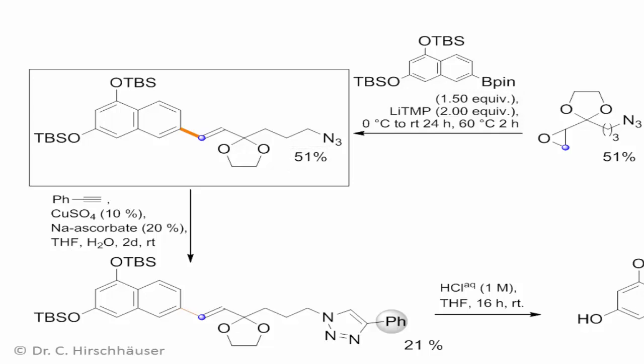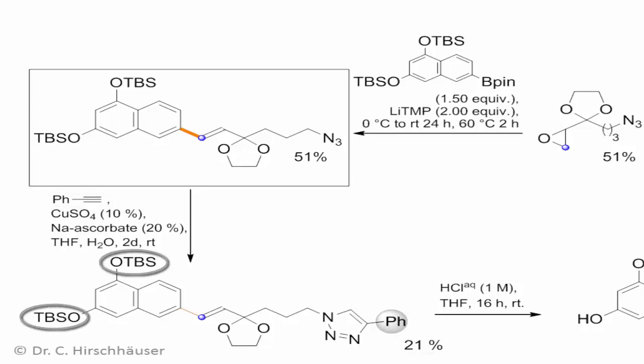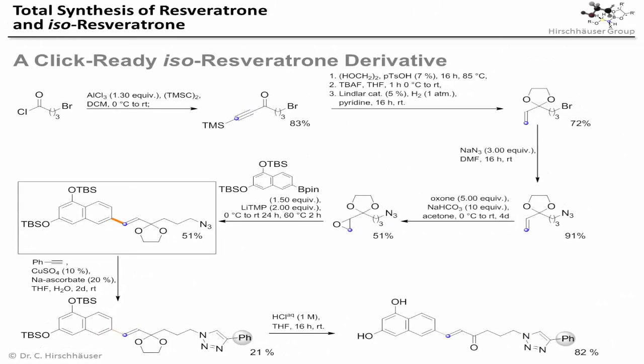This azide derivative might serve as an interesting label, since it can now be connected to the alkyne of your choice. We just used phenylacetylene as a cheap model substrate here, and were quite surprised by the low yield obtained after chromatography. However, according to mass spec, this was due to partial de-silylation of the phenyl ethers under the aqueous conditions. So using a different click protocol or avoiding chromatography after this step might be a good idea. Nevertheless, global deprotection under acidic conditions worked very well, and furnished the desired labeled product.